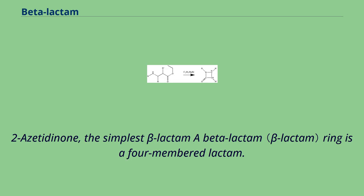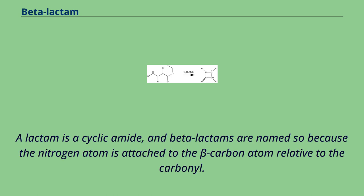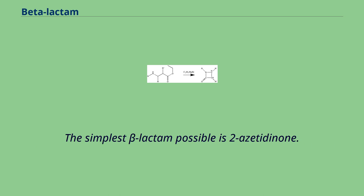2-azetidinone is the simplest beta-lactam. A beta-lactam ring is a four-membered lactam. A lactam is a cyclic amide, and beta-lactams are named so because the nitrogen atom is attached to the beta-carbon atom relative to the carbonyl. The simplest beta-lactam possible is 2-azetidinone.